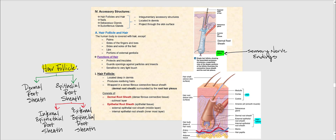Let's now discuss some of the accessory structures associated with the integumentary system. These include the hair follicles and hair, nails, sebaceous glands, and sudoriferous glands. These integumentary-associated structures are located in the dermis and project through the skin surface, basically the cutaneous membrane.